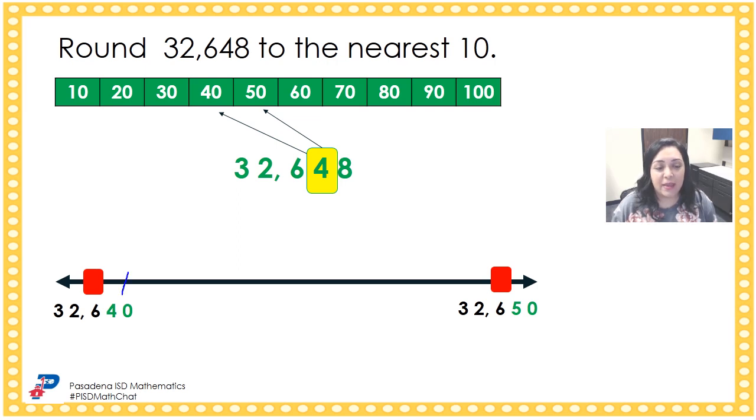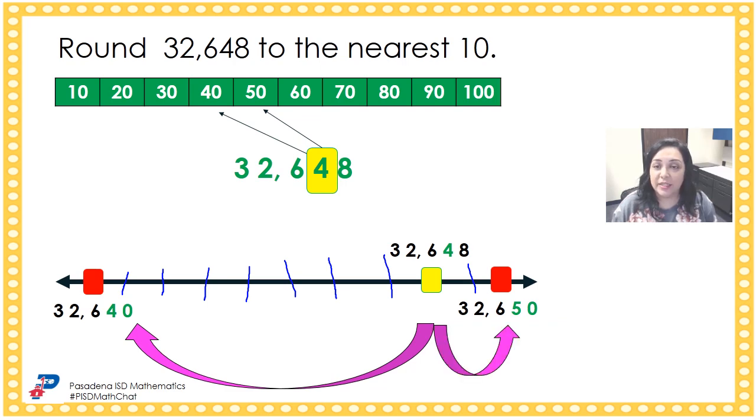So here we have maybe 32,641, 32,642 is about here, 32,643, 32,644, 32,645, 32,646, 32,647, 32,648, 32,649. That means that 32,648 is farther away from 32,640 and it is closer to 32,650.